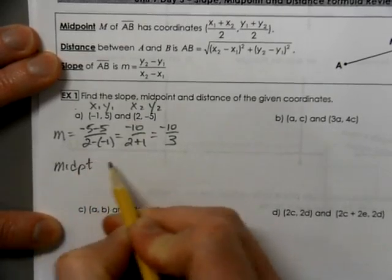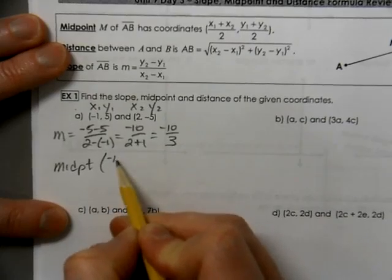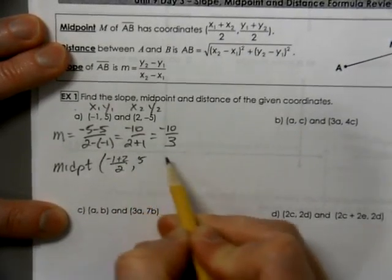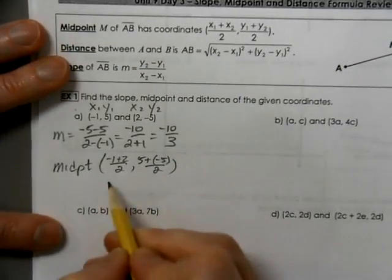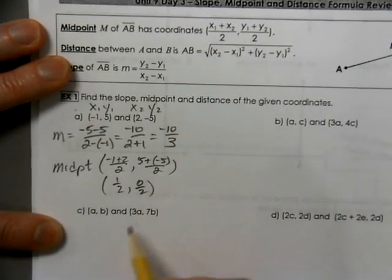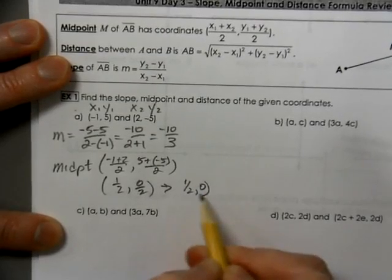Our midpoint is x1 plus x2 over 2, y1 plus y2 over 2. That leaves us with 1 half and 0 over 2. So you could call that 1 half, comma, 0.